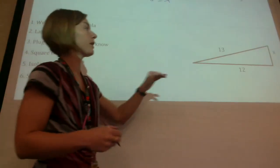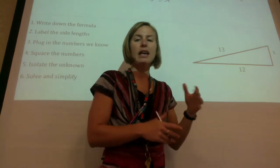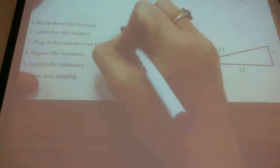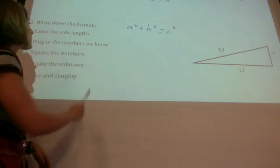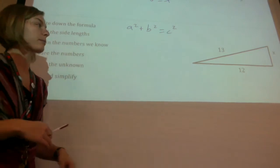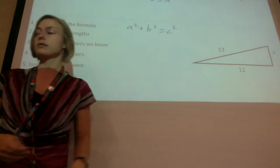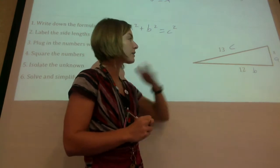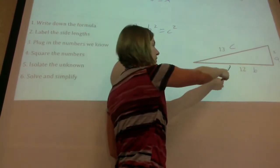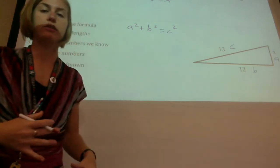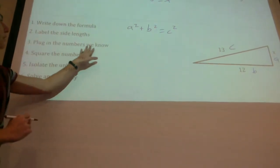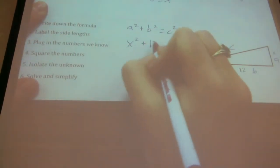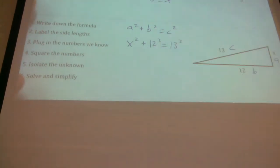In this next example, we're not missing C — we're missing one of the shorter sides. Step one: write down the formula. Step two: label the side lengths. Remember, A and B don't matter — it's only C that matters, so C has to be 13, the longest side. Then step three: plug in the numbers we know. A is X, B is 12 squared, and C is 13 squared.